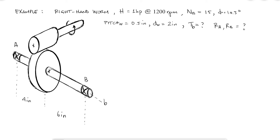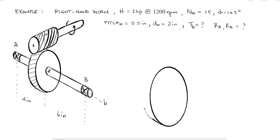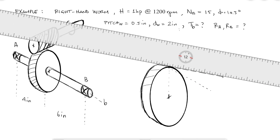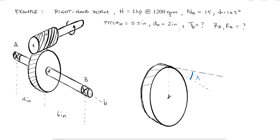A right-hand worm will have threads rotated clockwise from threads perpendicular to its axis, which means the worm gear is a left-hand gear with a helix angle equal to the lead angle of the worm. Assuming 100% efficiency, shaft A and shaft B will rotate with the same power, meaning the power is the same at the worm or at the worm gear.